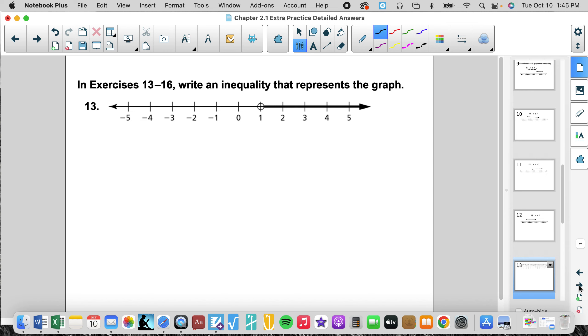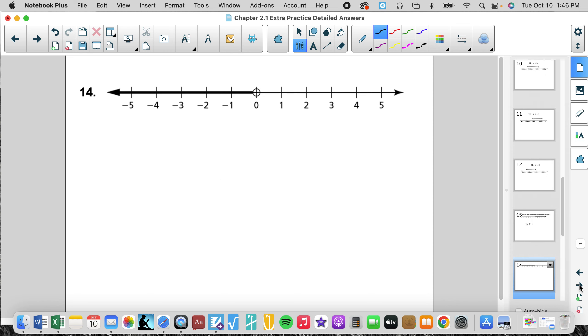Number 13 says write an inequality that represents the graph. So we'll pick a variable. We'll say n is going to be greater than, because the values are increasing to the right. And we do not include an equal sign because it's an open circle. And we write the border. Its border is 1, so n is greater than 1. Doesn't matter what variable you use.